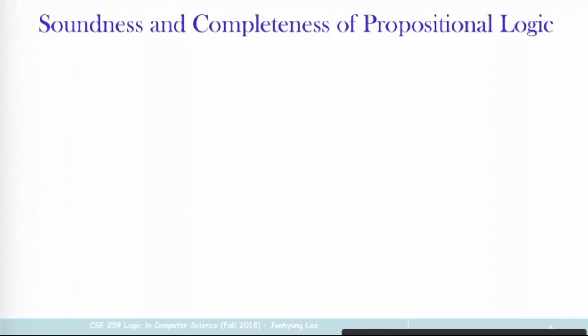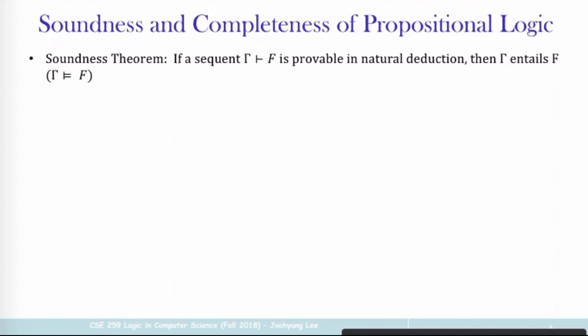The next topic is the soundness and completeness theorem. There are actually two ways to understand propositional logic: one is using only natural deduction, and the other is using only the satisfaction, entailment, and so forth. The first thing we did was using only natural deduction — that is called proof theory. It's only about how to write the proof for the sequent. The next we learned — interpretation, valuation, satisfaction, tautology, entailment, satisfiability — those things belong to so-called model theory.